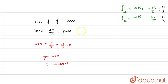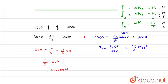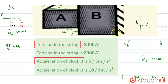Substituting T = 2500 N into the equation for B: 3000 − (4/5)(2500) = 300a, giving 3000 − 2000 = 1000 = 300a, so the acceleration of B is 10/3 m/s². Block A does not move due to the string and block B constraint. Checking the options, the tension is 2500 N and acceleration is 10/3, so option D is the correct answer.